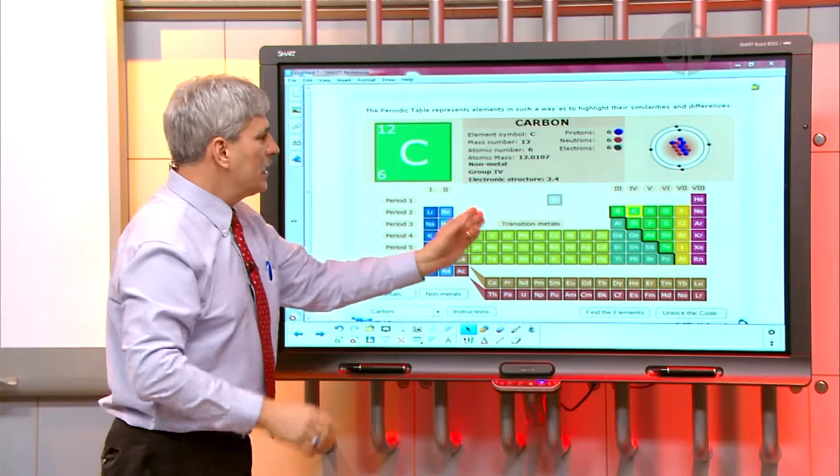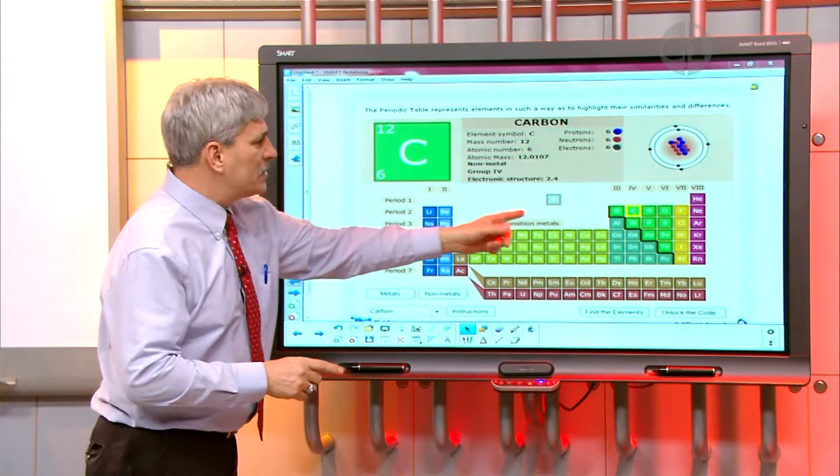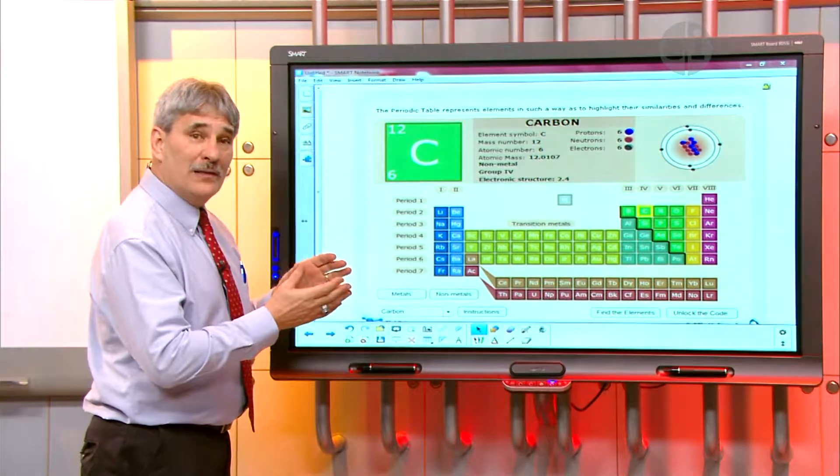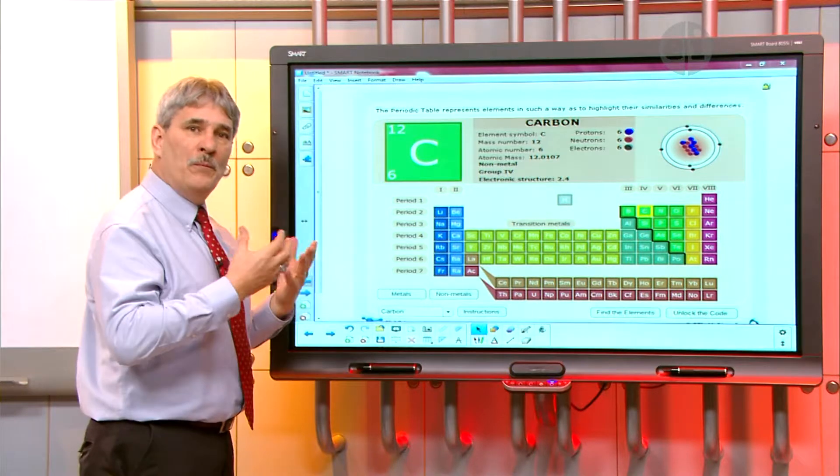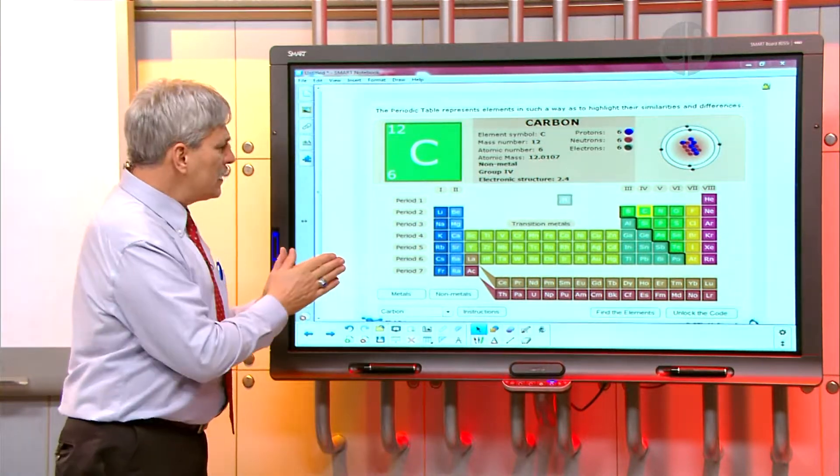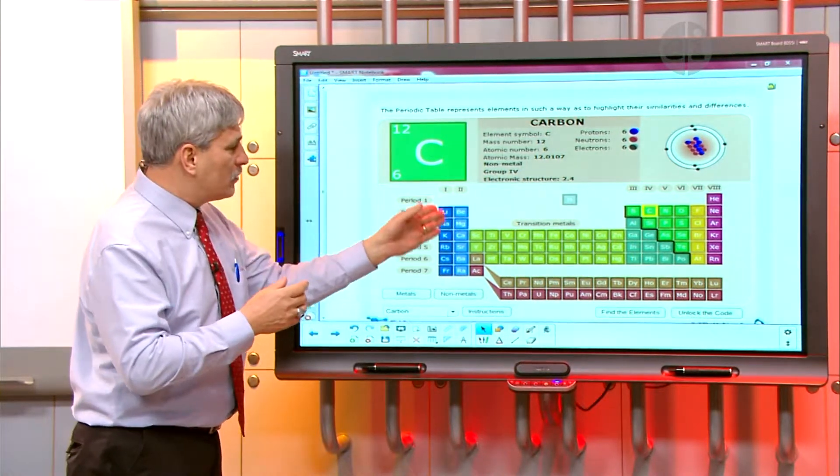So notice that these are arranged in order of increasing atomic number. There's gaps that are left here so that atoms with the same number of valence electrons, which means electrons in their outer shell, would be together. And that's what causes them to have the same chemical properties. The chemical properties and the bonding is determined by the number of electrons in the outer shell.